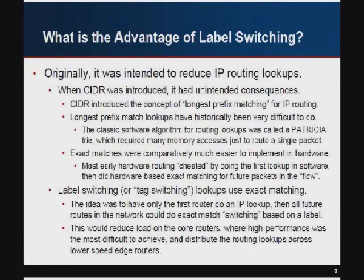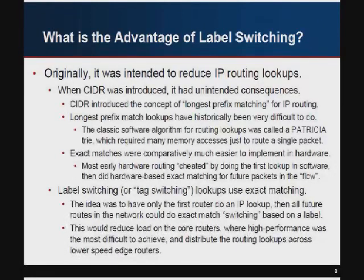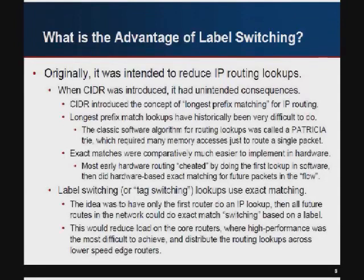Historically, MPLS was originally intended to reduce routing lookups. When CIDR was introduced, longest prefix matching meant you had to look at a tree to do a routing lookup — a slash 24 might be a member of a slash 19, which is a member of a slash 17, and so on. Historically in software this was done with a Patricia tree — a bit tree where depending on the number of more specific prefixes the tree can be quite deep. This created an indeterminate lookup where you weren't sure how long it would take or how many memory accesses it would require, and it was actually pretty difficult to implement in hardware.